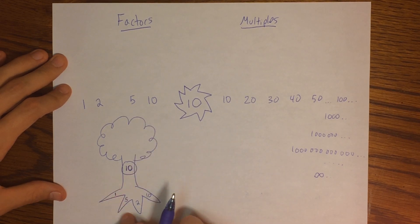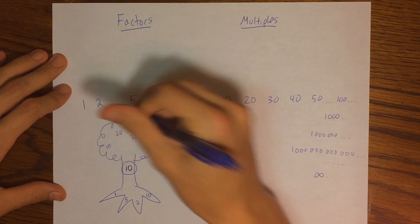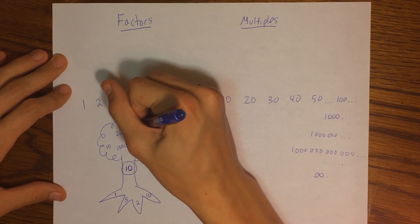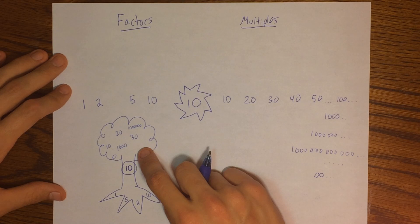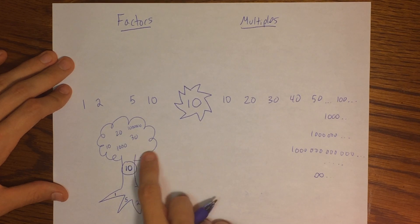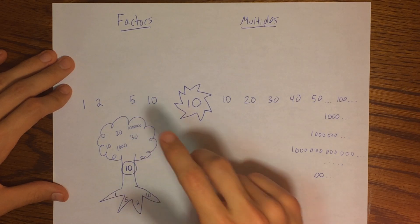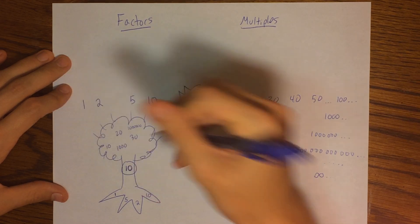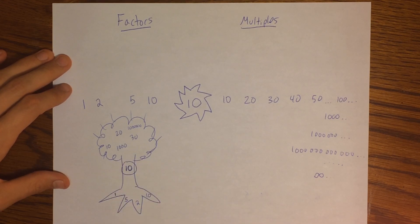If these numbers can be multiplied by some other number to equal 10, they're like the building blocks of 10 — just like the roots of a tree build the tree up. There's only so many roots of a tree, just like there's only so many factors of a number, so they're finite. Now the multiples of 10 are different — 10, 20, 30, all the way up to a thousand, a million, a trillion. There are too many to count, so I'll say infinitely many. The leaves of a tree represent the multiples, branching out and up forever.